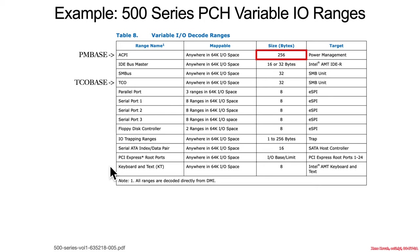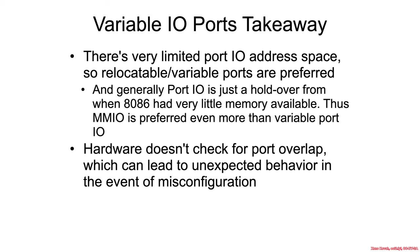There are still plenty of legacy things like parallel ports and serial ports, which are useful for debug output, as well as built-in Intel hardware like the SATA host controller. The takeaway for variable IO ports is that because there's a very limited range of IO ports total, Intel doesn't recommend that people actually use port IO. Some things are required and implemented as registers inside Intel hardware that the BIOS or OS configures to access particular configuration registers. Because hardware and virtualization software frequently don't check for port overlap, this can lead to very strange behavior that is sometimes to an attacker's advantage.